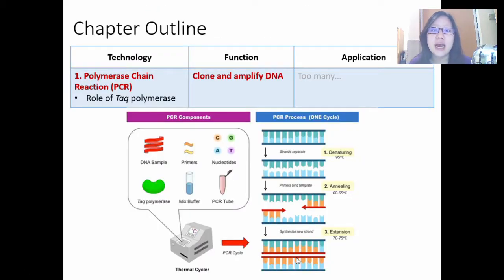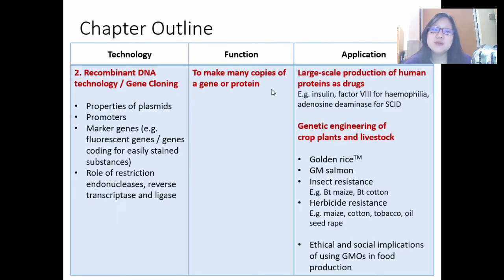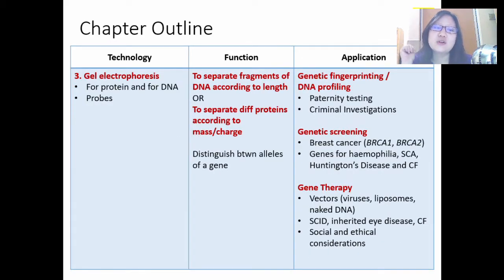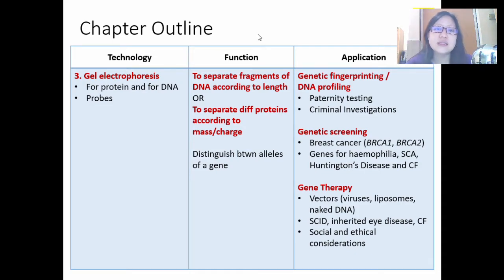Number one, we'll be learning polymerase chain reaction. In PCR, the function is to clone and amplify DNA. Amplify DNA means to make many, many copies of DNA. Number two, we'll be learning recombinant DNA technology or gene cloning. This is to make many copies of DNA as well, but it also can make many copies of protein — whatever protein you want. Usually this is done in bacteria or in a eukaryotic cell. Number three, we're going to be learning gel electrophoresis. Think of this as chromatography, but for DNA. Gel electrophoresis is to separate the DNA fragments according to length, or separate different proteins according to mass or charge.